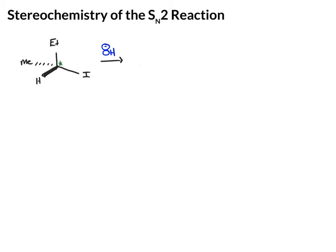In this case, if you assign the R and S configuration to this chiral center, you should find that it has the R configuration.